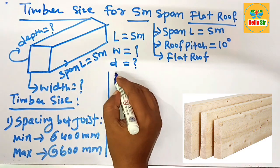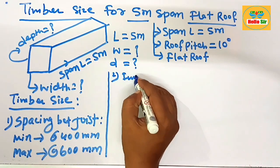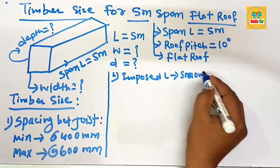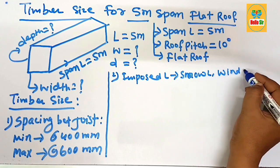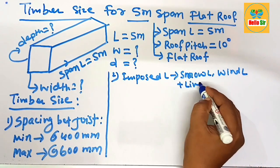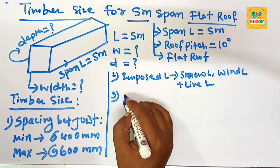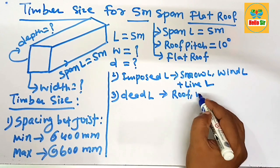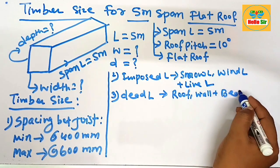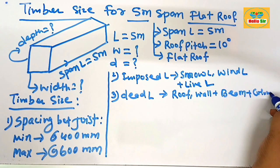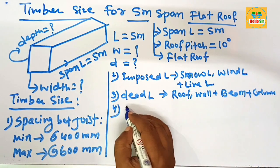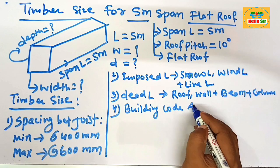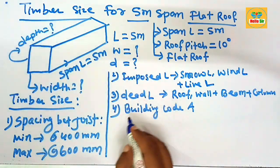The second major factor is the imposed load, which consists of snow load, wind load, and live load. The third major factor is the dead load of the structure, which includes the roof load, wall, beam, and column. The fourth major factor is the building code in your area.